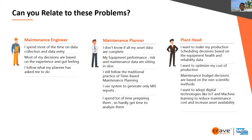The planner is busy doing day-to-day work. And finally, the plant head says: 'I want to make my production scheduling decisions based on equipment health and reliability.' The plant head attends conferences and wants the best available tools for decision-making. So everybody is not aligned — and the question is: how do we get them to be aligned?